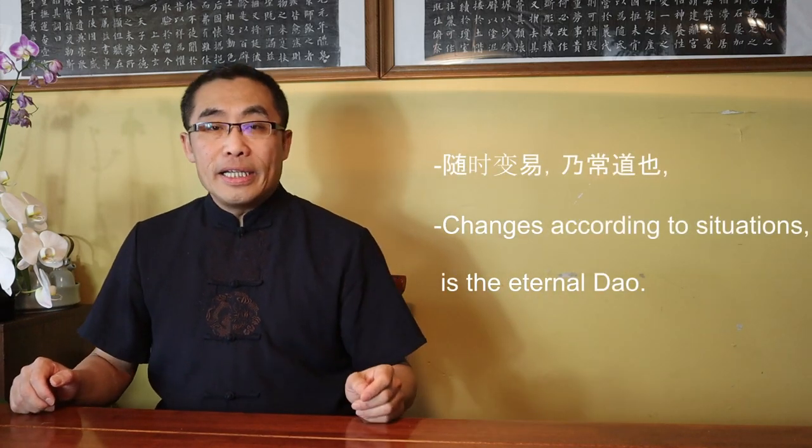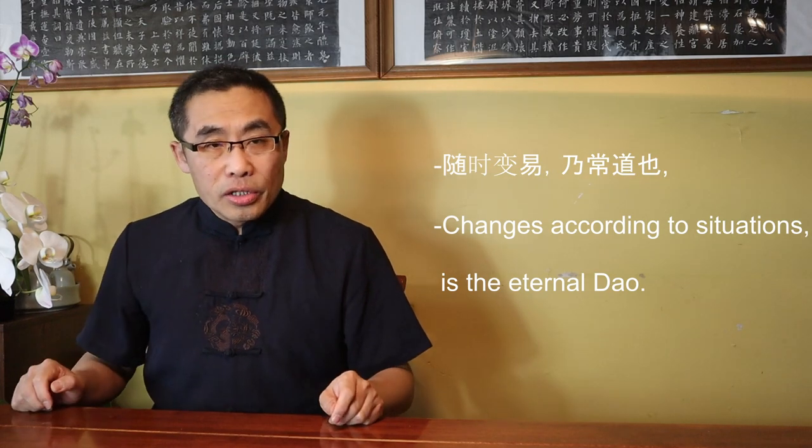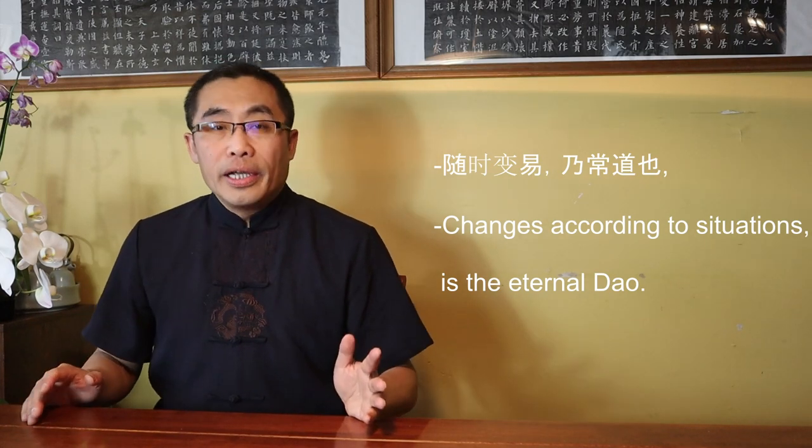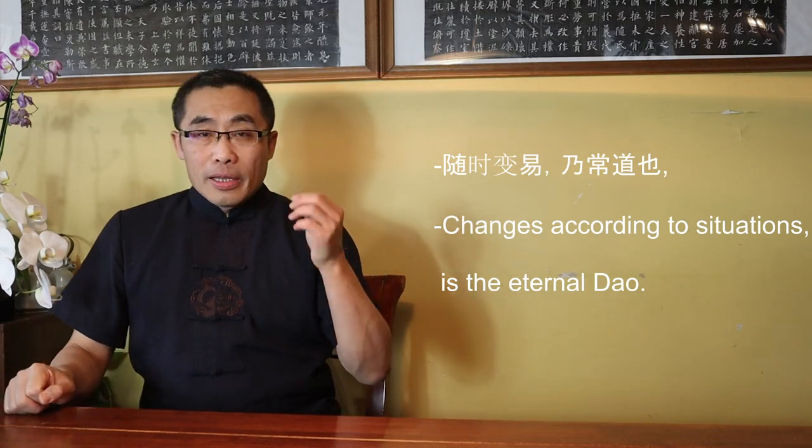It is worth noting that the usage of the word Chang, which means eternal and everlasting, does not mean here that Dao does not change. Eternal and everlasting should not be translated as 'never change.' In many commentaries, this word is translated as sui shi bian yi nai chang dao ye, or 'changes according to the situations is the eternal Dao.' This concept will be elaborated on in chapters 25 and 40.